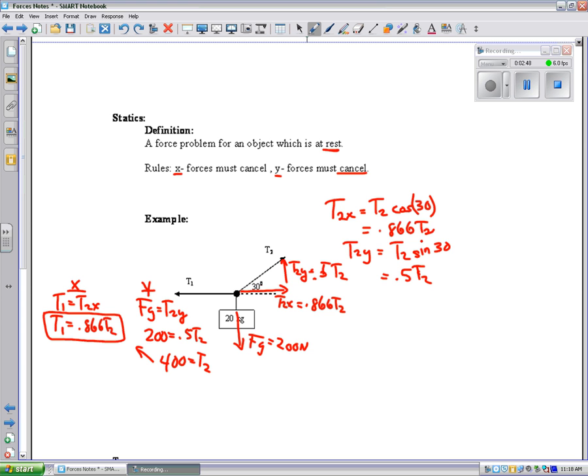Then, I can plug that in, and I will get T1 equals 0.866 times T2. My value of T2 now I know is 400. And when I calculate that, I get a value of 346 for T1. So, that is a static problem.